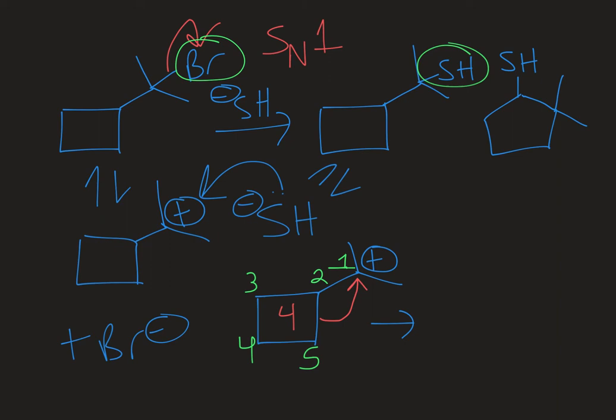What's driving a ring expansion in most cases is the formation of a more stable ring. A five-membered ring is better able to accommodate bond angles of about 109.5 degrees and it relieves the substantial ring strain that's present in a four-membered ring.